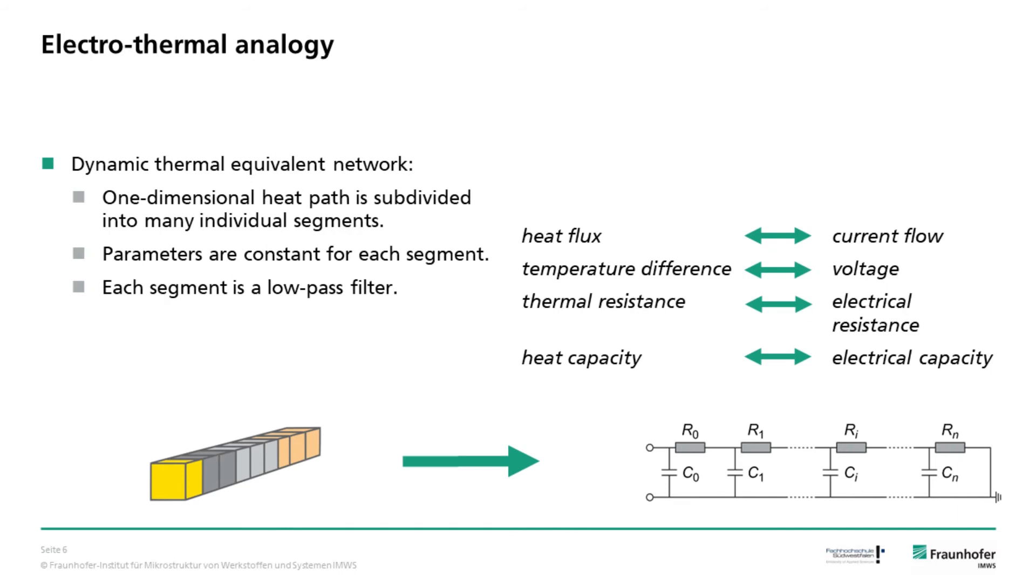For the theoretical description of this one-dimensional heat path, we use an electrothermal analogy. Here the heat path is divided into small blocks. Inside these blocks, the heat capacity as well as the thermal resistance are regarded as constant. The thermal parameters are then replaced with their electrical counterparts. This is done to conveniently reuse the theoretical models and concepts which have been developed for the description of electrical circuits.